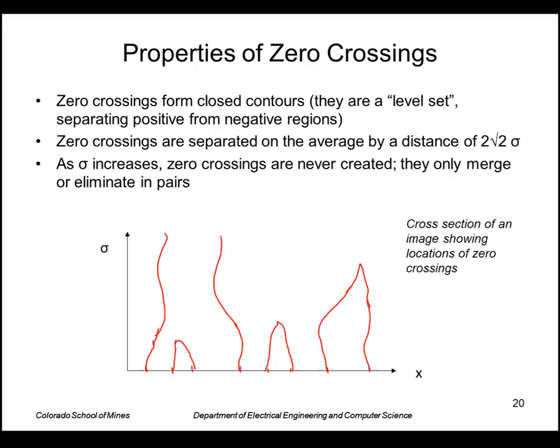We can estimate the average separation of zero crossings. If we convolve the Gaussian of size sigma with the image, we would expect those zero crossings to occur on average about every two times square root of two sigma.